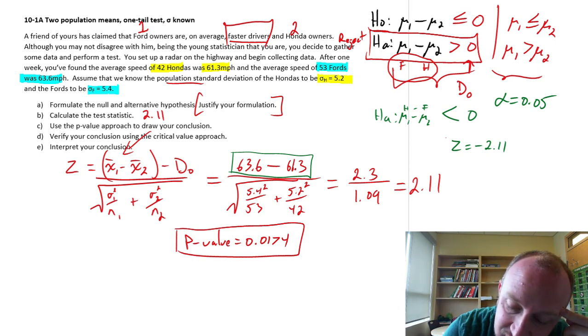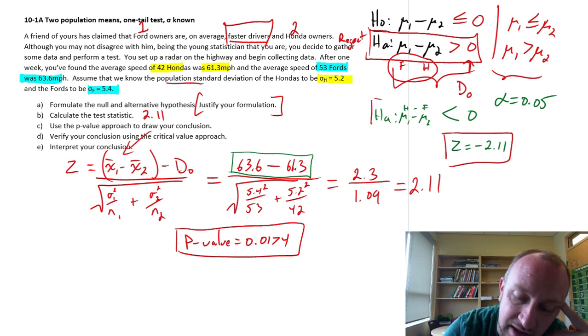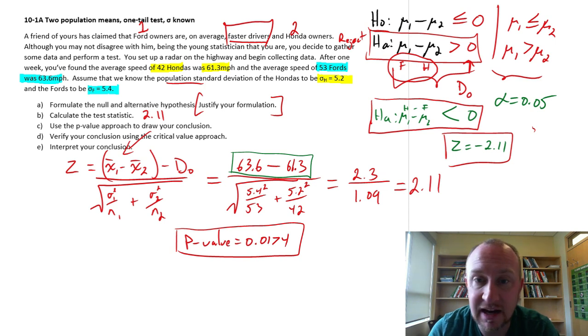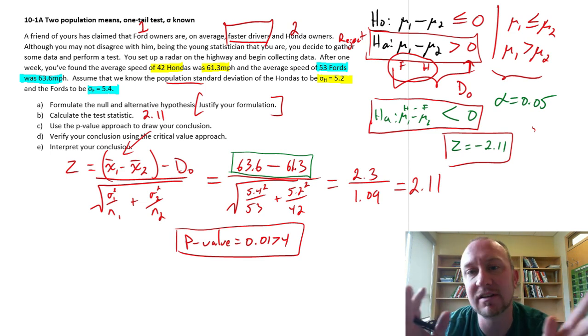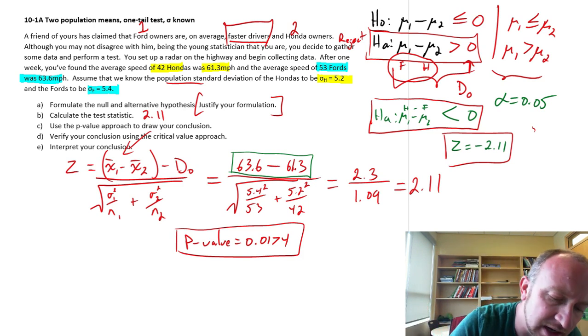Had we done this as a two-tailed test, we would have gotten exactly that same p-value, so we would have rejected our null hypotheses. And in that case, we would have had evidence to support this alternative hypotheses, which means to say, I have evidence to show that the Honda drivers are on average slower than the Ford drivers. So the outcome is the same, regardless of if we'd set this up as an upper-tailed test or a lower-tailed test.